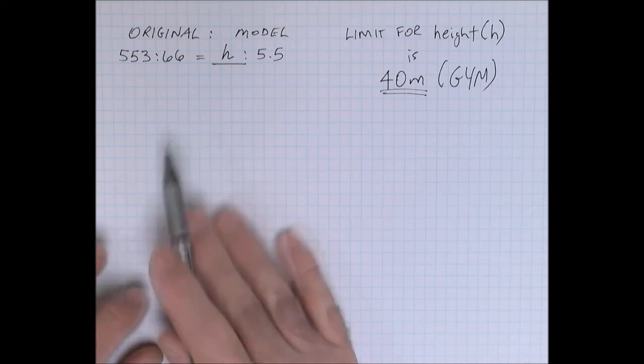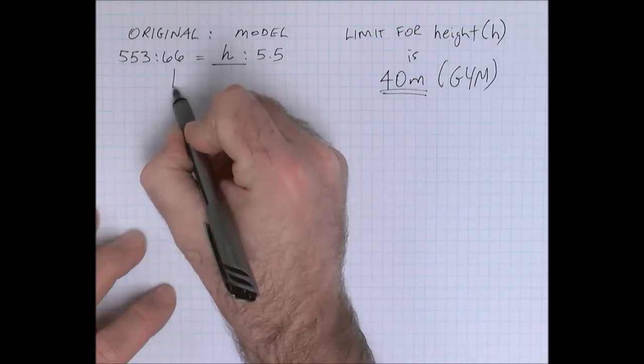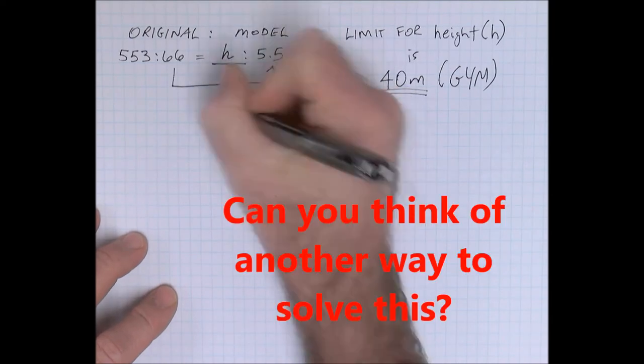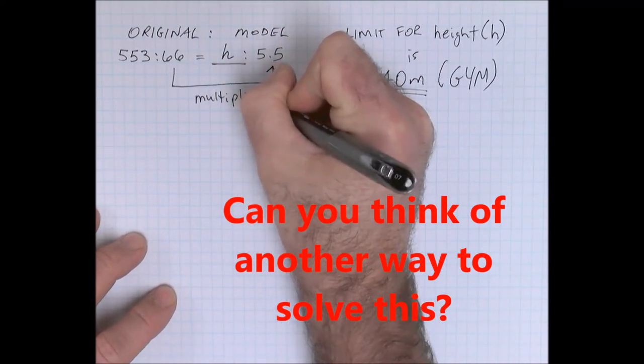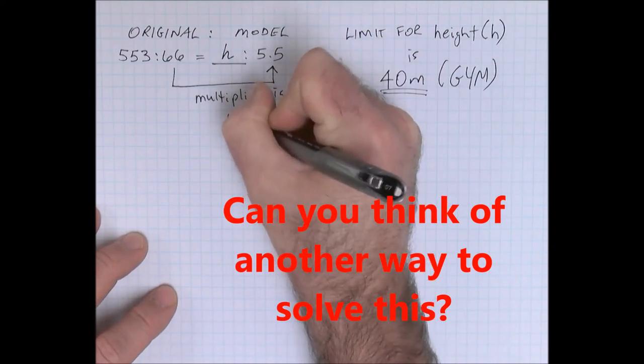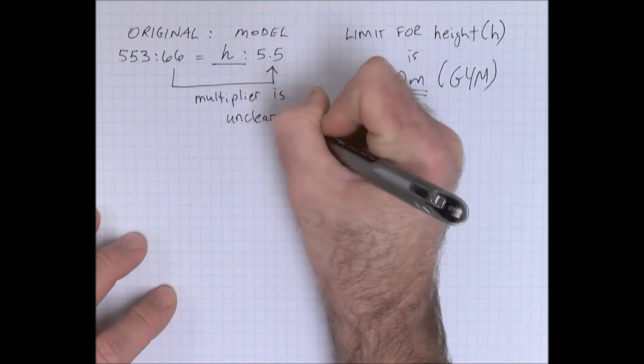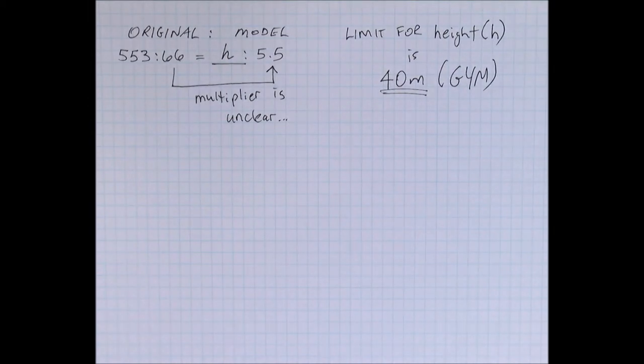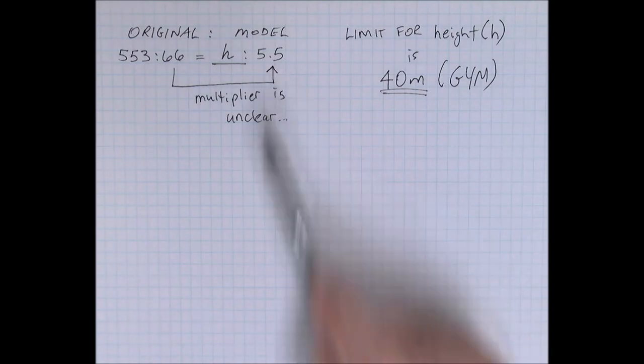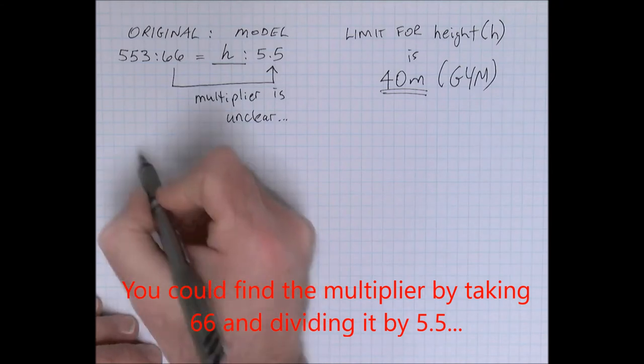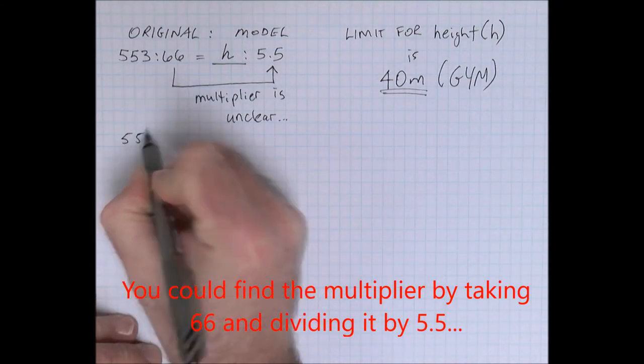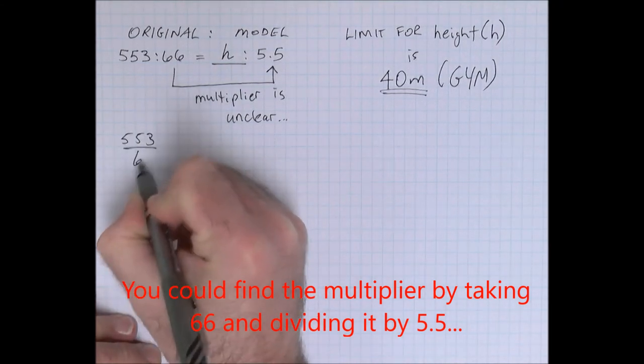this is probably the easiest way to do it. In this question here, the multiplier is unclear. You can't really spot it using mental math. You might be able to see it, but it doesn't come out of your times tables, and there's a decimal value involved, making this a little bit difficult to see. So if we set up a proportion as a fraction,